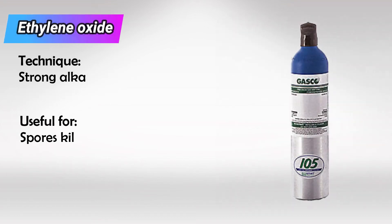Next we have ethylene oxide. This is an alkaline product with good sporicidal activity.